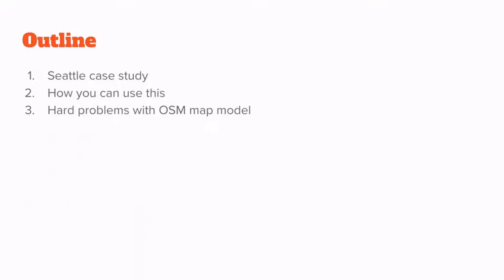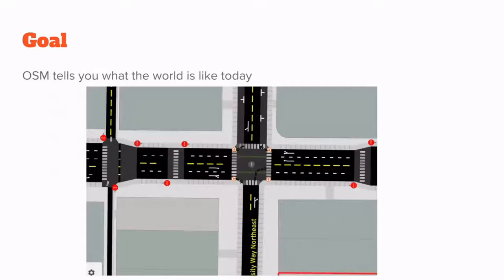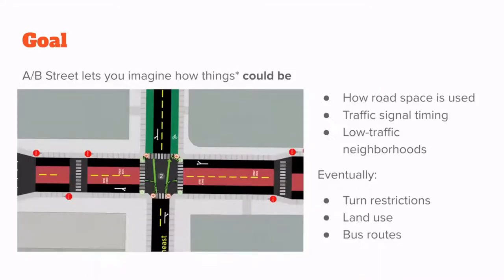OpenStreetMap tells you what the world is like today. This is an intersection in the U District in Seattle, and from OSM data you can figure out where turn lanes are, where street parking is, traffic signals, and things like that. The software AB Street lets you imagine how some of these things could be — it gives you an interface to edit roads, reallocate lanes maybe for buses or bikes, mess with traffic signal timing, and set access restrictions to create things like low traffic neighborhoods.